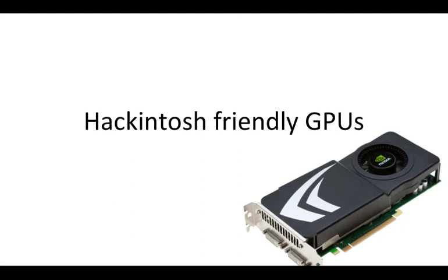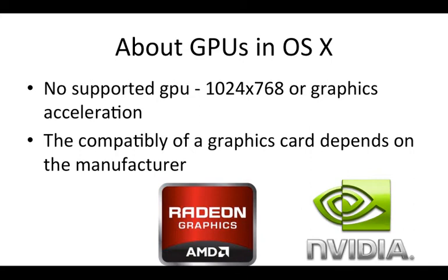The first thing to note about graphics cards in OS X is if you've got no GPU — no dedicated graphics card and no supported inbuilt GPU in your CPU — you're going to be stuck with a very limited resolution of 1024x768, which looks ugly. Also you won't get any graphics acceleration or special effects.